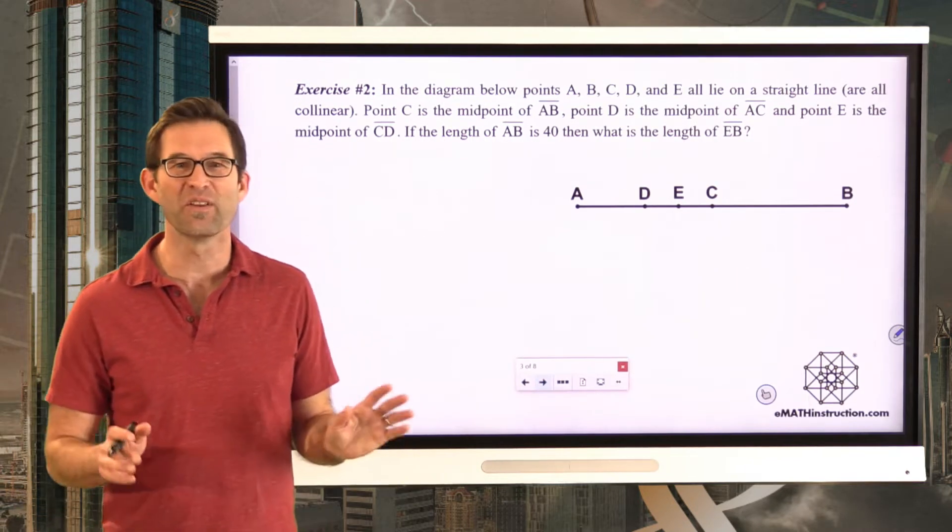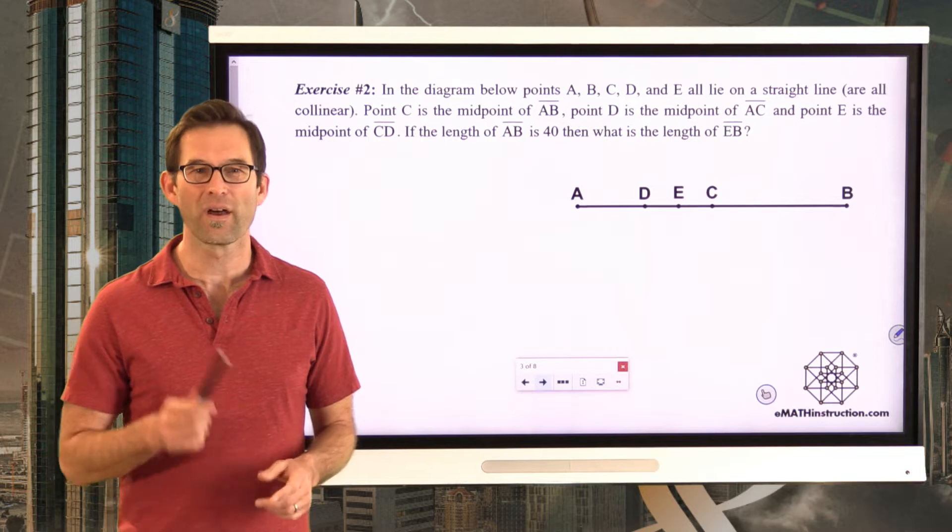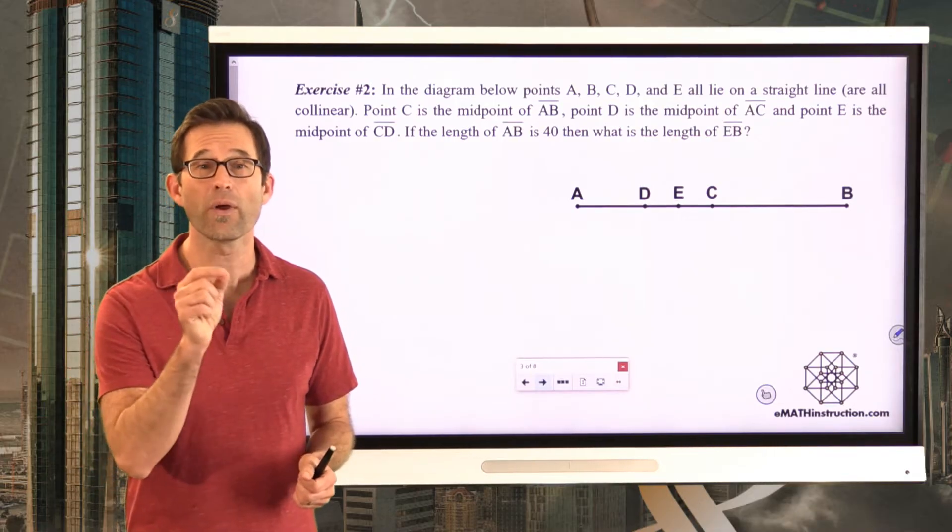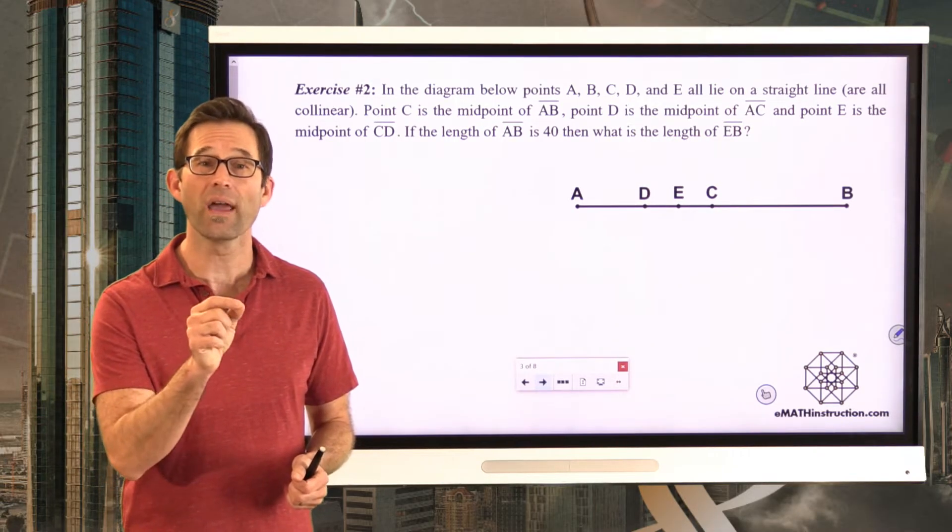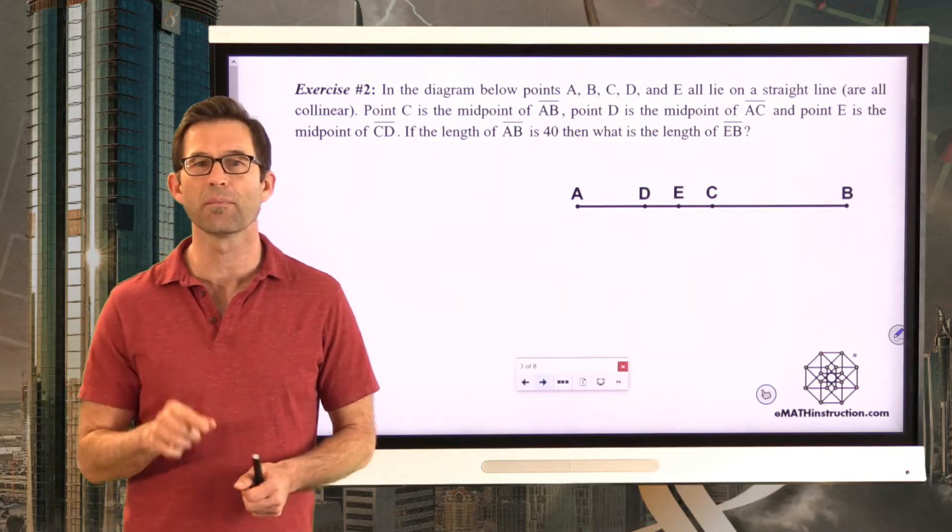Let's keep going with the idea of a midpoint. Oh, I love this problem. It really messes with you. But here we go. Exercise number two. In the diagram below, points A, B, C, D, and E all lie on a straight line, are all collinear. Point C is the midpoint of segment AB. Point D is the midpoint of segment AC. And point E is the midpoint of segment CD. If the length of AB is 40, what is the length of EB? This is kind of cool. What I'd like you to do is play around a little bit with this problem, given the knowledge that what midpoints do is they sit at the very middle of a segment and divide it, if you will, into two segments that have equal lengths.